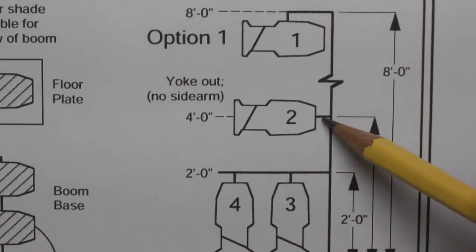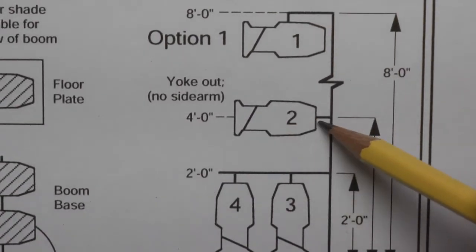If you're trying to draw a unit without a sidearm, and you're just going to yoke it out on the C-clamp, then you draw it this way.